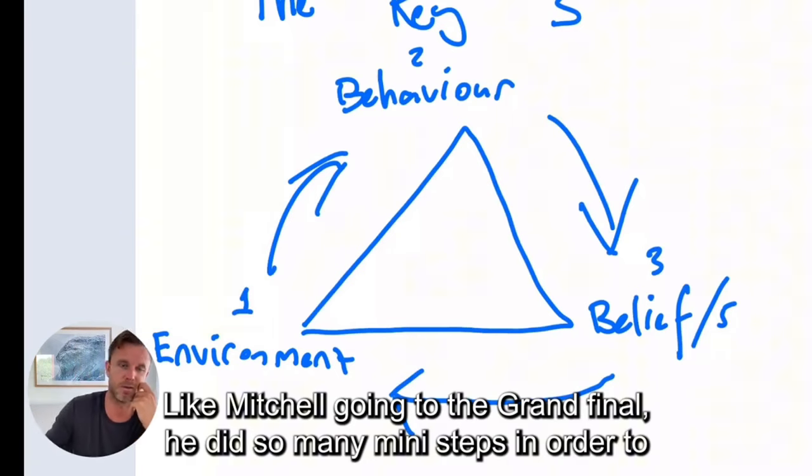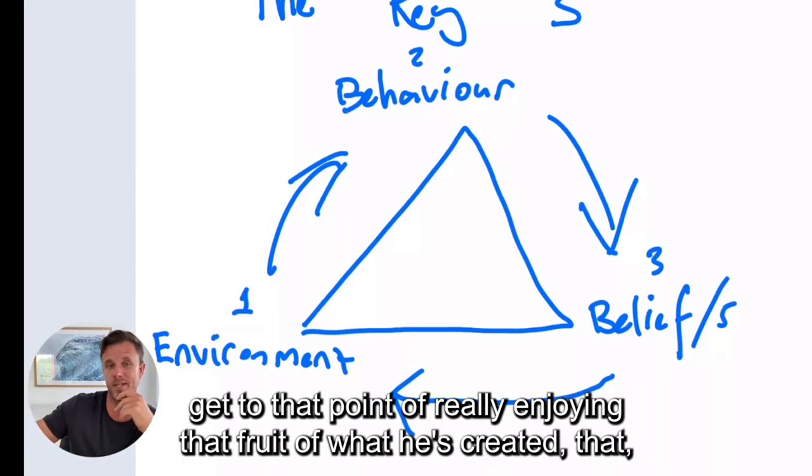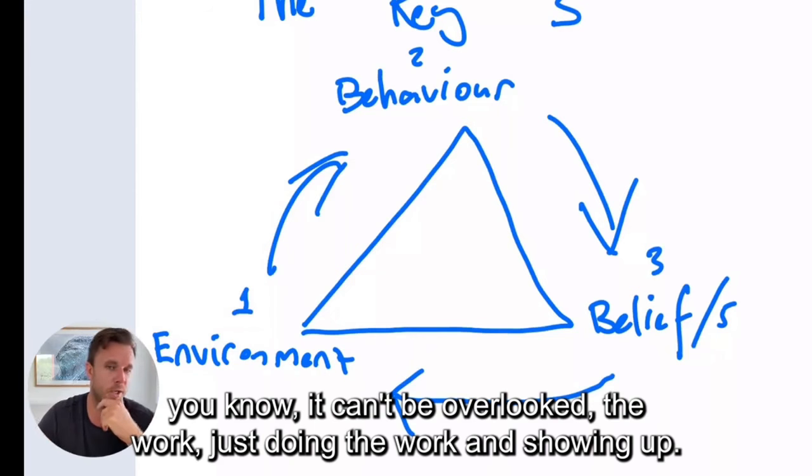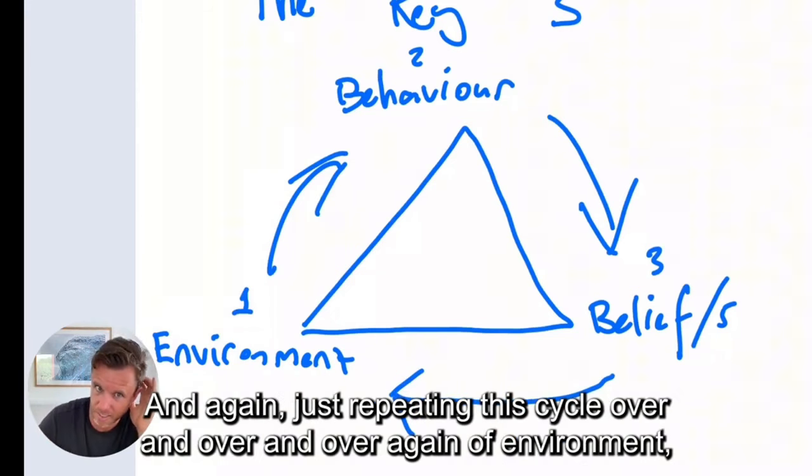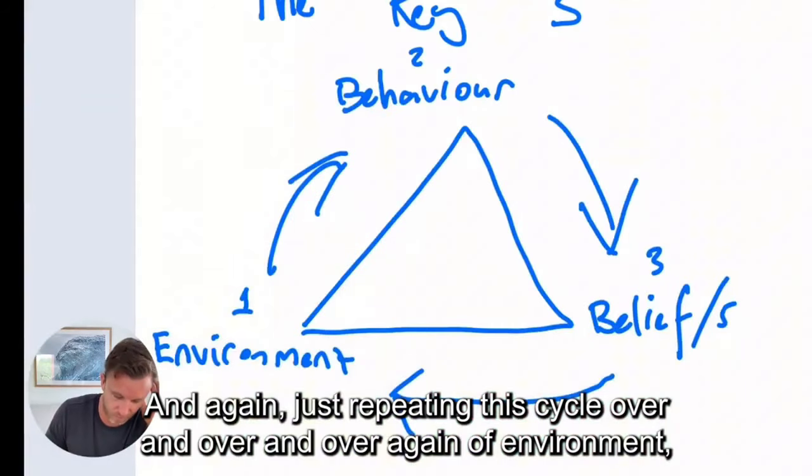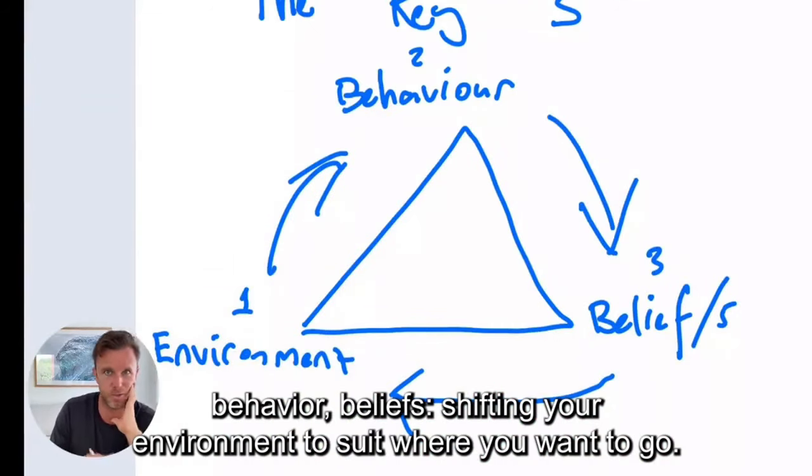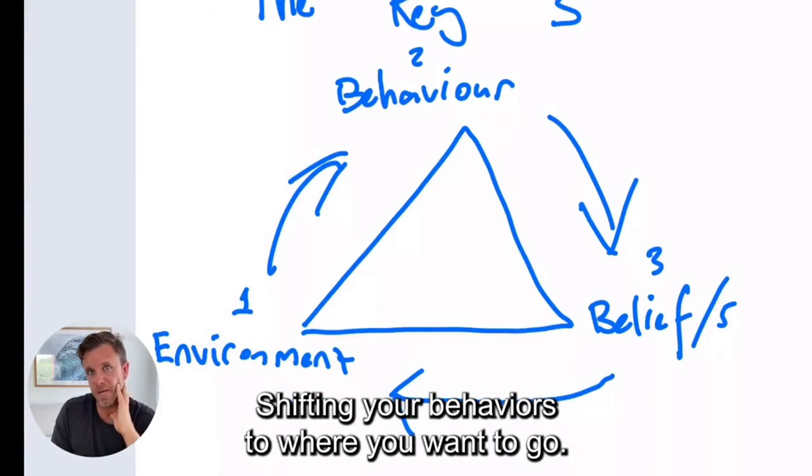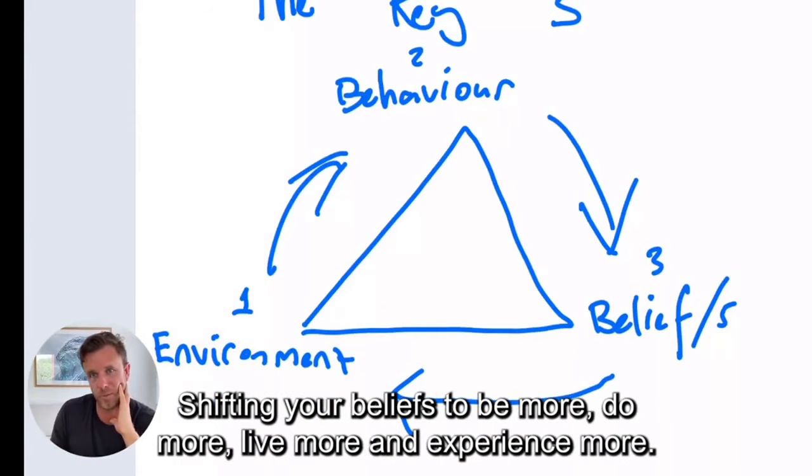And like Mitchell going to the grand final, he did so many mini steps in order to get to that point of really enjoying that fruit of what he's created. It can't be overlooked, the work, just doing the work and showing up. And again, just repeating this cycle over and over again of environment, behavior, beliefs, shifting your environment to suit where you want to go, shifting your behaviors to where you want to go, shifting your beliefs to be more, do more, live more, and experience more.